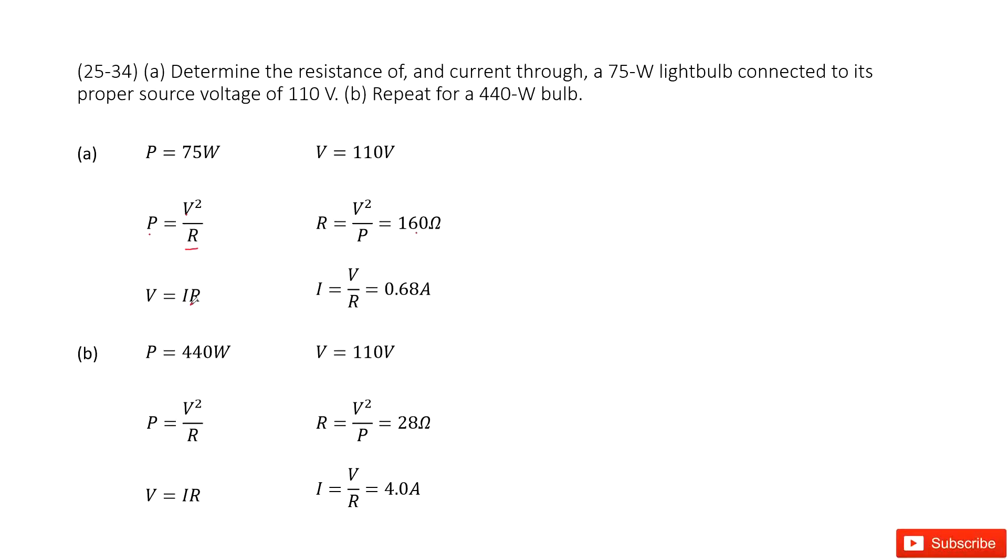You can see we have the voltage given, and R was found in the first step. So you get the current as the voltage over the resistance. Input the voltage and resistance values, and you get the answer: 0.68 amperes.